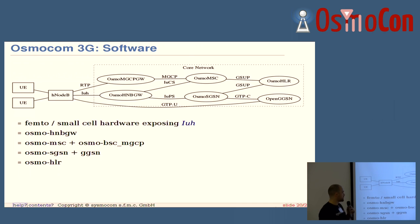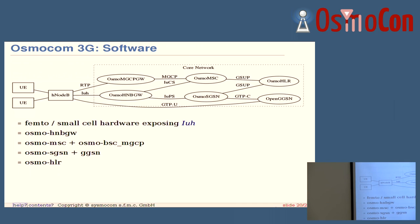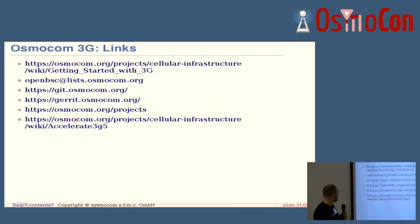That's the whole picture again: voice and data. We have the femto small cell, the HNB gateway, the MSC and the RTP control gateway for voice, and the SGSN and GGSN with a direct GTP-U connection to the femtocell — both using the HLR, the Home Location Register, for authentication data. And that's some links for later reference.